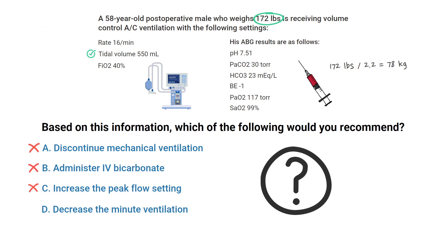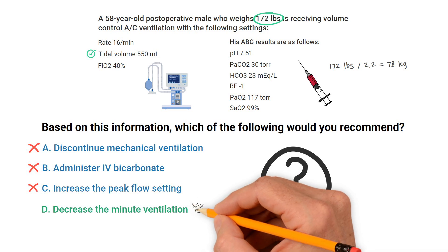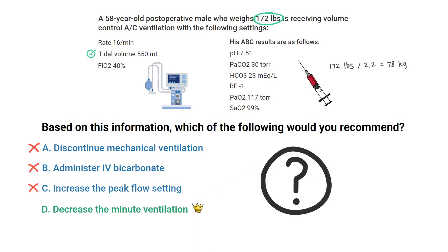None of the other answer choices really make sense in this situation. So by taking everything given to us in the question and breaking it all down, we can determine that the correct answer has to be D: decrease the minute ventilation.